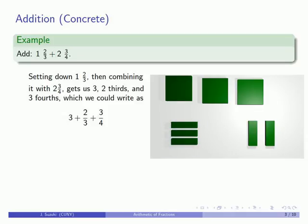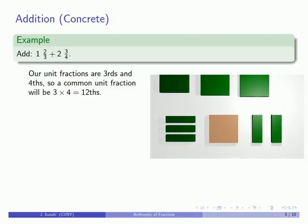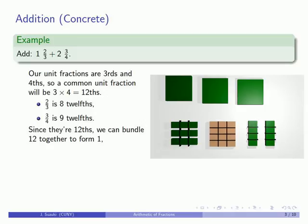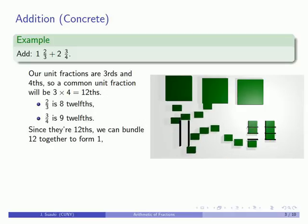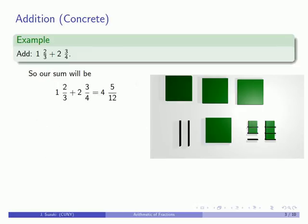We could write this as 3 plus 2 thirds plus 3 fourths, but we won't. Our fractional parts were thirds and fourths, so a common unit fraction is 3 times 4 twelfths. These 2 thirds become 8 twelfths, and these 3 fourths become 9 twelfths. Since they're twelfths, we can bundle 12 of them together to form 1, and there are 5 left over. So our sum is 4 and 5 twelfths.